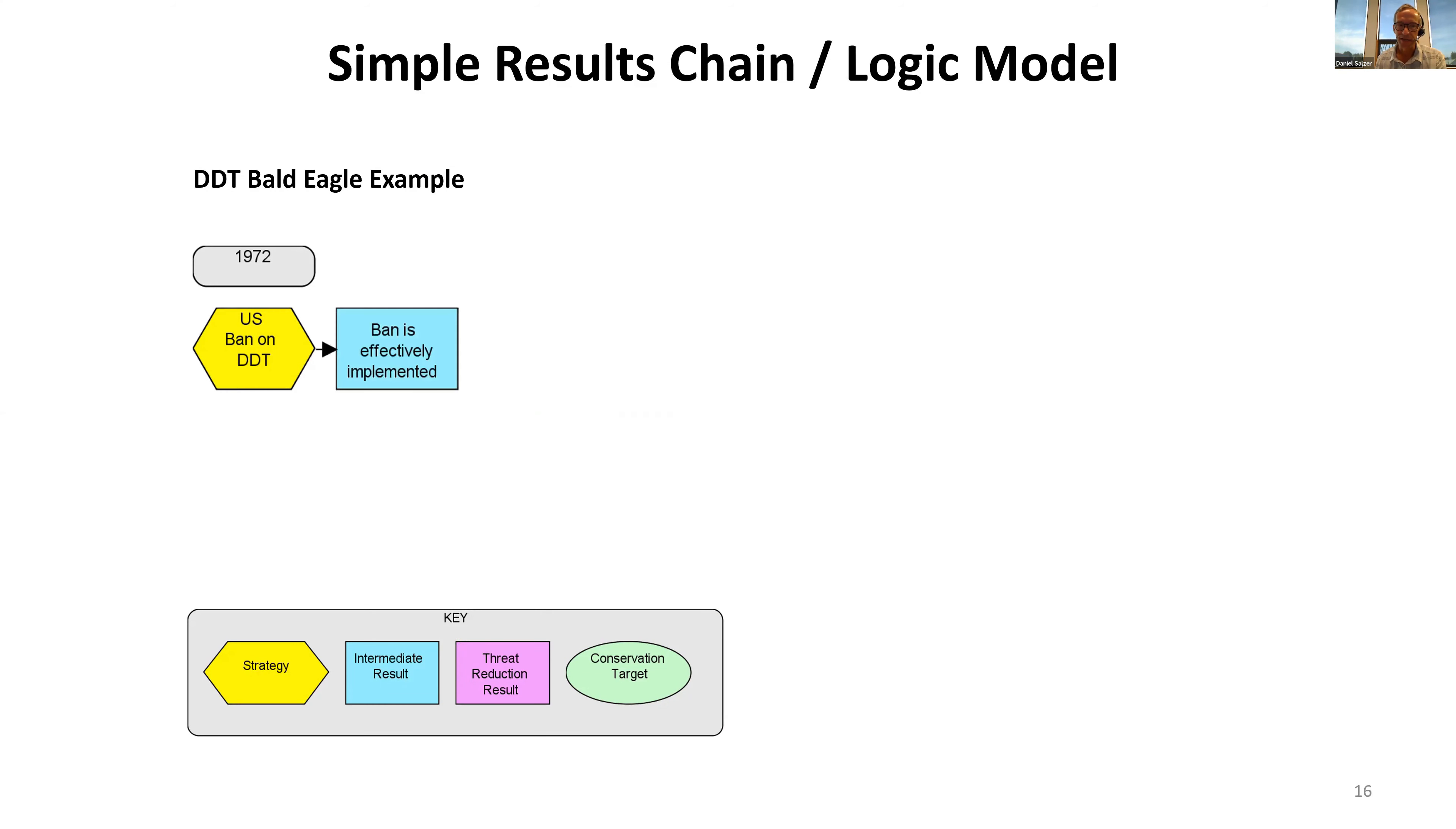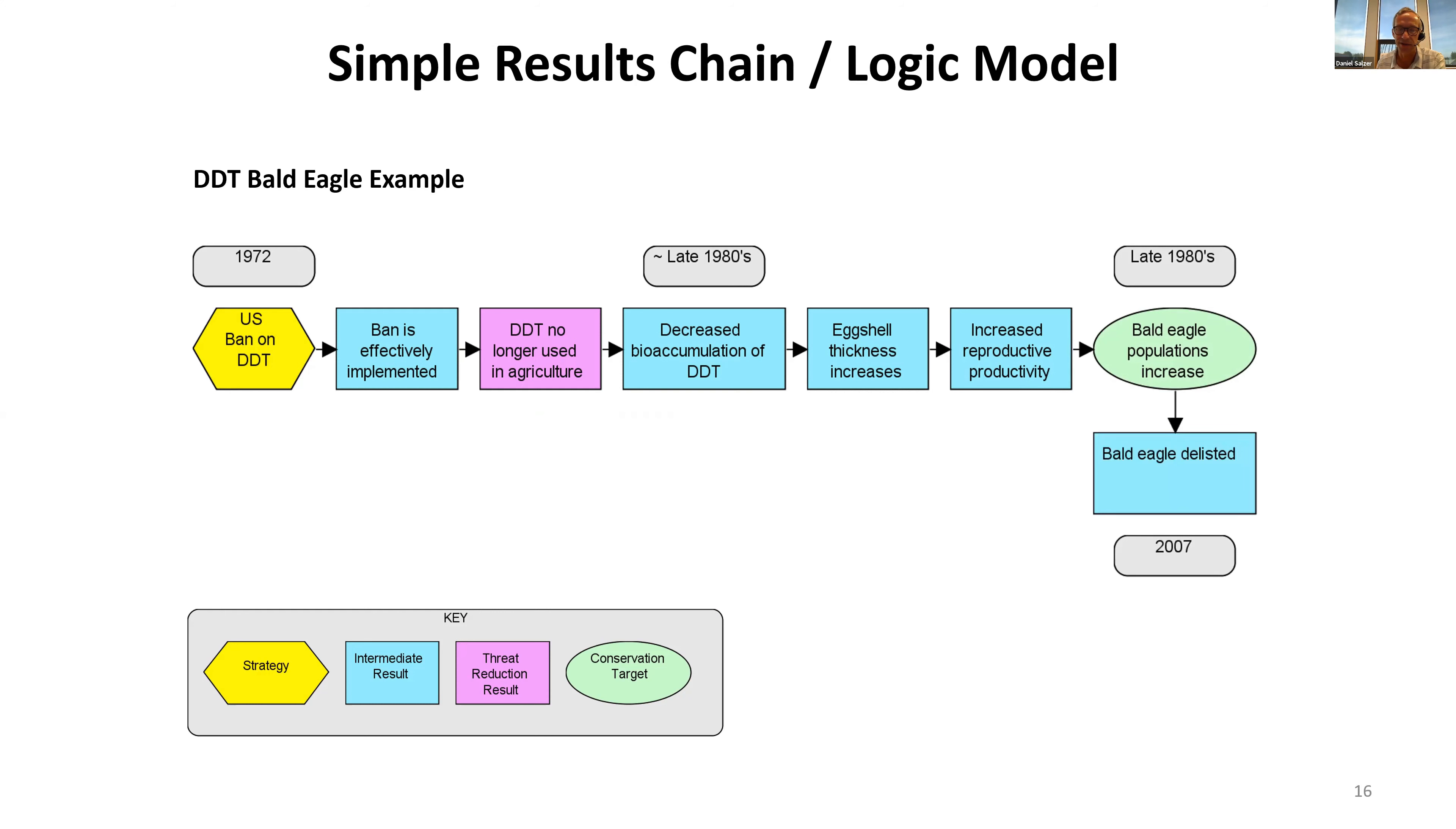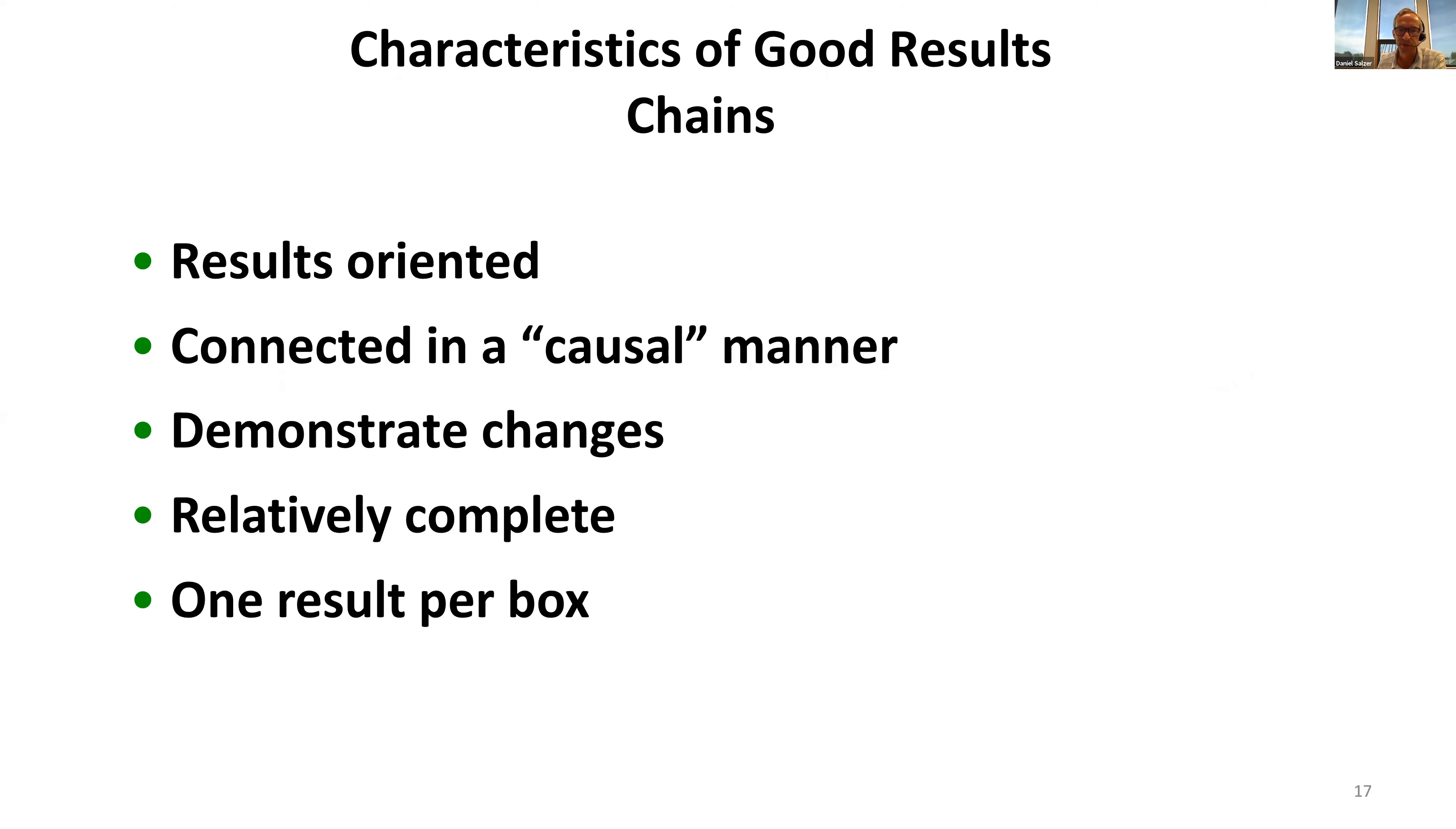Using a widely understood conservation success story to illustrate results chains: We have the ban on DDT being effectively implemented, DDT no longer being used in ag, decreased bioaccumulation, illegal eggshell thickness increasing, leading to increased productivity and the bald eagle populations rebounded, ultimately leading to the delisting.